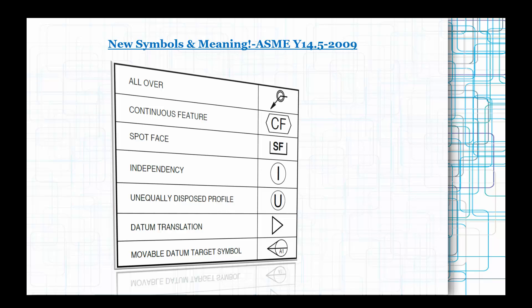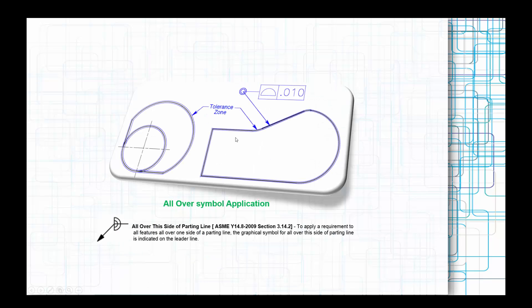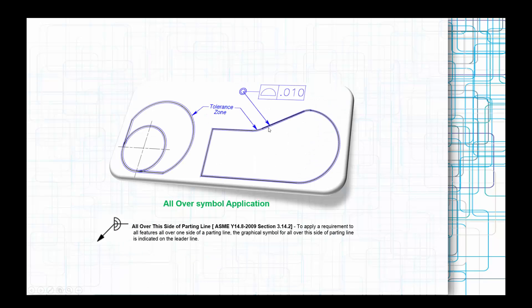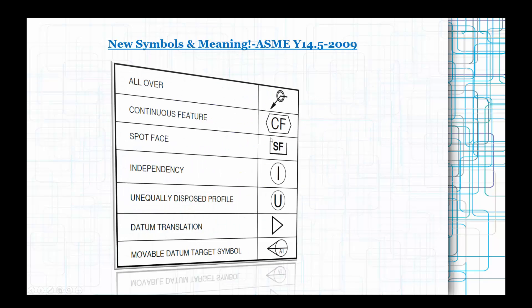If you look at the major enhancements, the very profound ones are: all over, and continuous features. We'll understand the all over symbol and continuous feature interpretation. Then we'll see spot face, independency (I), unequally disposed profile, datum translation with a triangle symbol, and movable datum target symbol. So seven different symbols I'll be focusing on today.